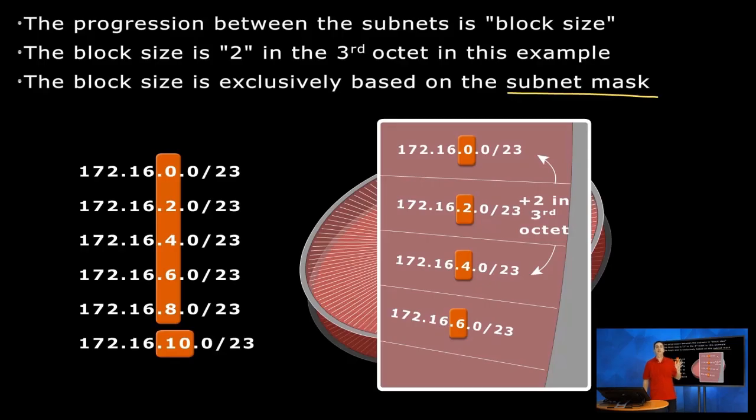And in what octet specifically is this? Is it octet number one, octet number two, octet number three, or octet number four? Octet number three. That's right. So in this case, we can say our block size is two within the third octet. So we're counting by two in the third octet.